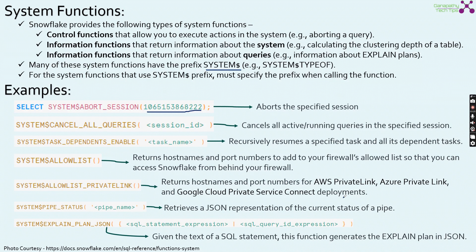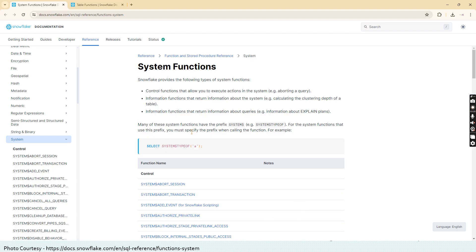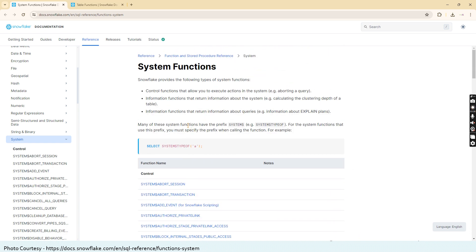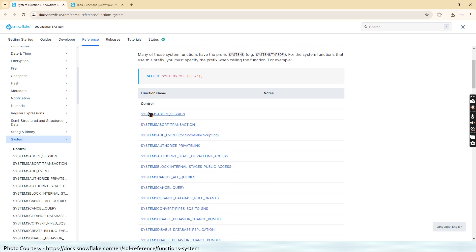Before moving on to table functions, let us see how this thing works here. Here if you see the system functions in the Snowflake documentation, this contains the complete list of all the system functions. If you see here, these are all the set of control functions.